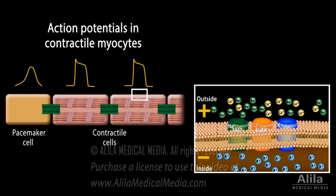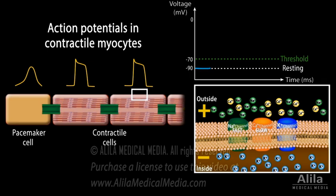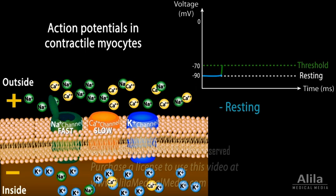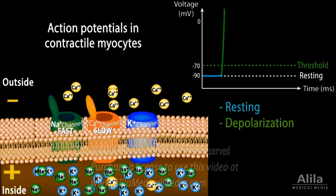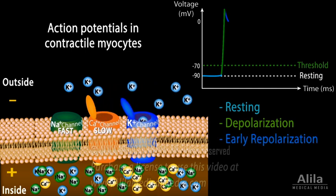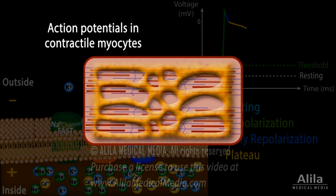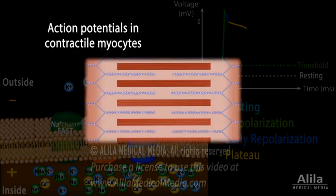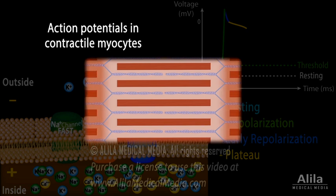Contractile myocytes contain myofibrils and a large amount of calcium stored in the sarcoplasmic reticulum (SR). They have a stable resting potential and depolarize only when stimulated by a neighboring myocyte. The depolarizing phase is due to fast sodium channels and slow calcium channels. Early repolarization is due to potassium efflux. However, calcium channels remain open and potassium efflux is eventually balanced by calcium influx, keeping the membrane potential relatively stable for about 200 ms — resulting in the plateau phase. Calcium influx triggers a much greater calcium release from the SR, a process called calcium-induced calcium release. Calcium then sets off muscle contraction by the sliding filament mechanism.